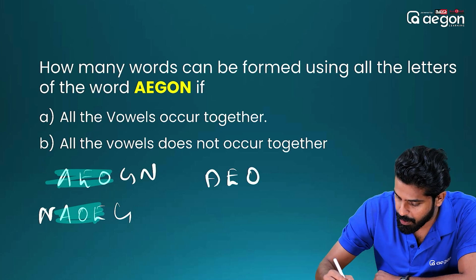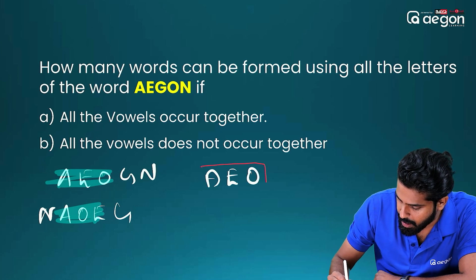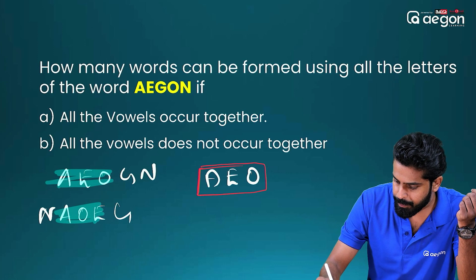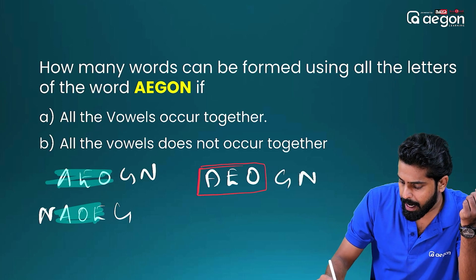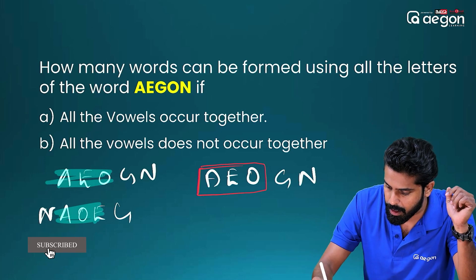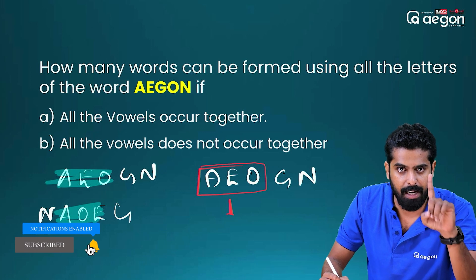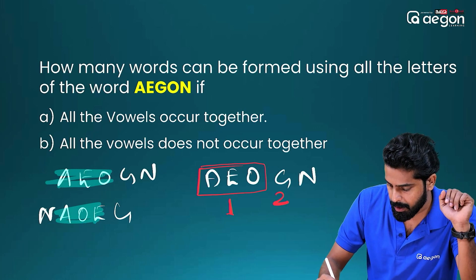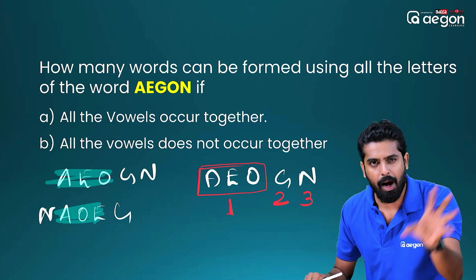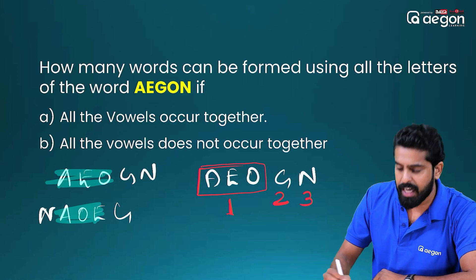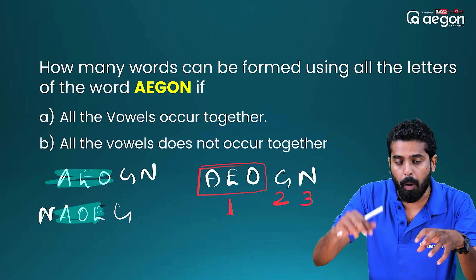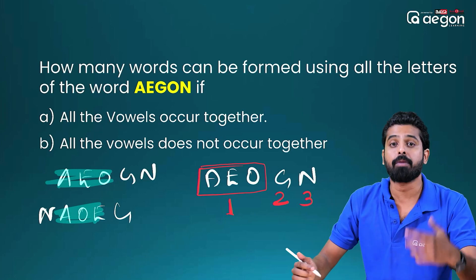A, E, O — 3 vowels. Consider these 3 vowels as 1 single object. The other letters are G and N. So total objects to arrange: the vowel group, G, and N — that is 3 objects, giving 3 factorial arrangements.